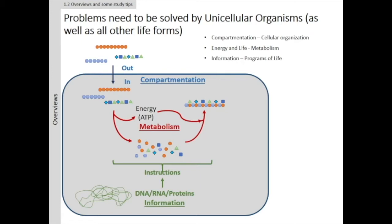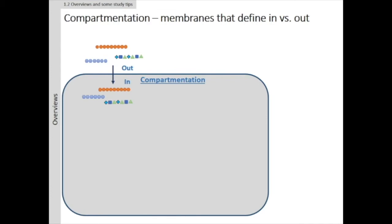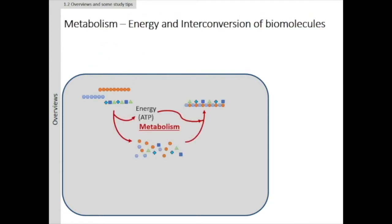There are three major problems I will cover concerning how unicellular organisms survive: compartmentation, metabolism, and instruction. The first will be the focus of today's lecture on compartmentation. In order for life to occur, there must be a way to define what is in and what is out. Imagine you have a house, a door, a boundary. You need to define a boundary.